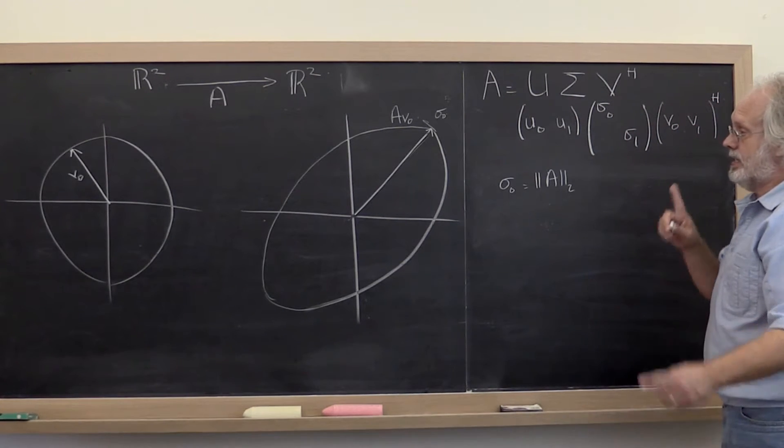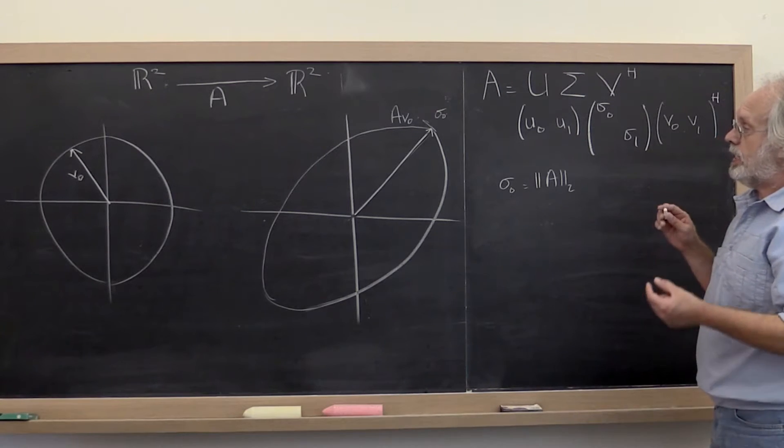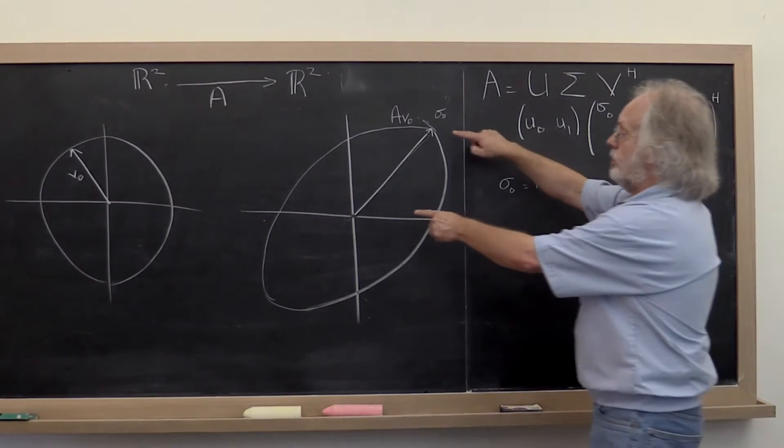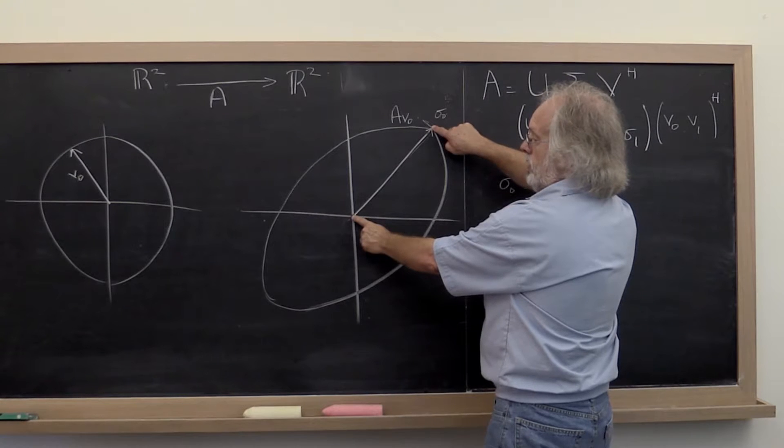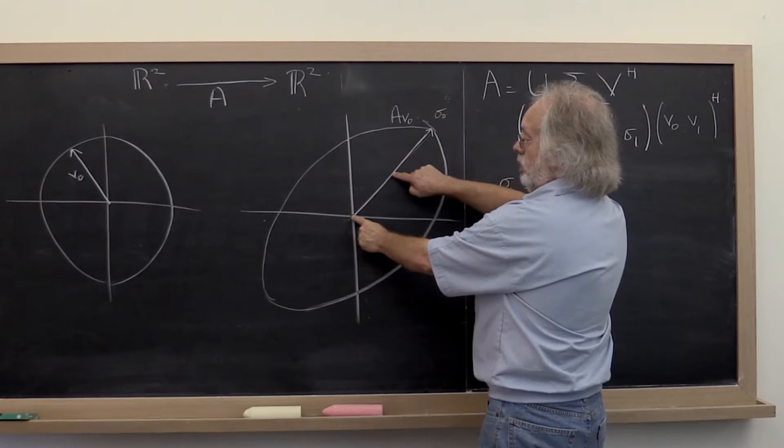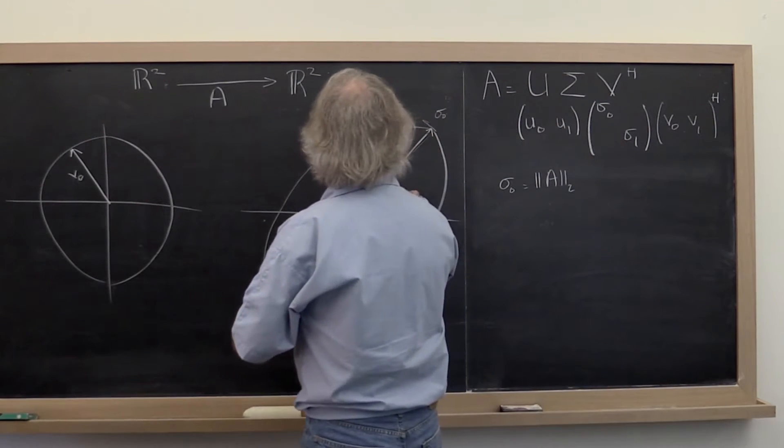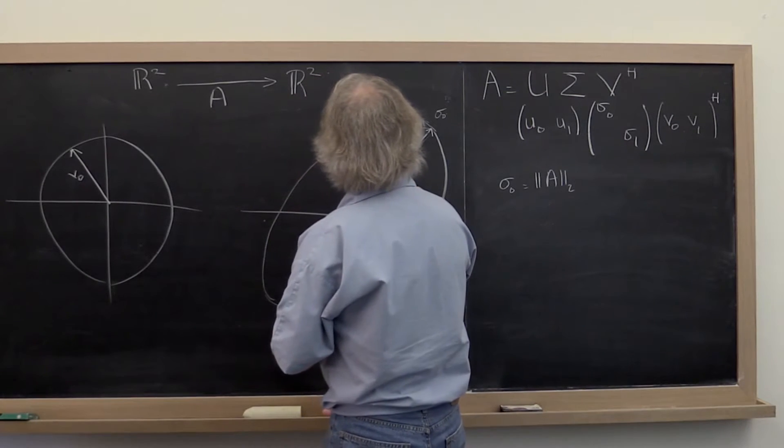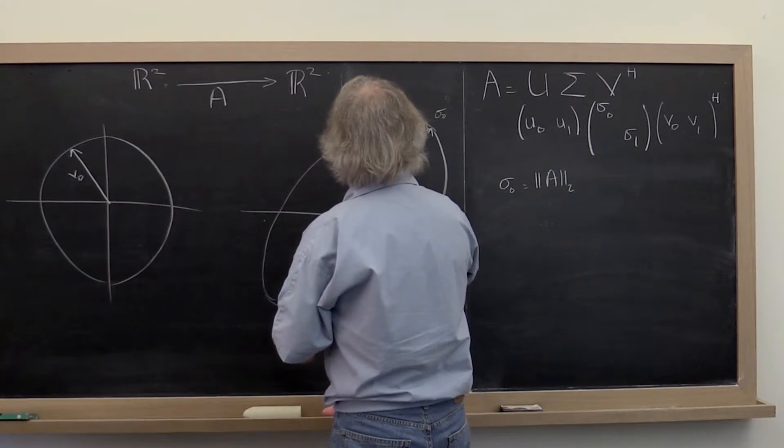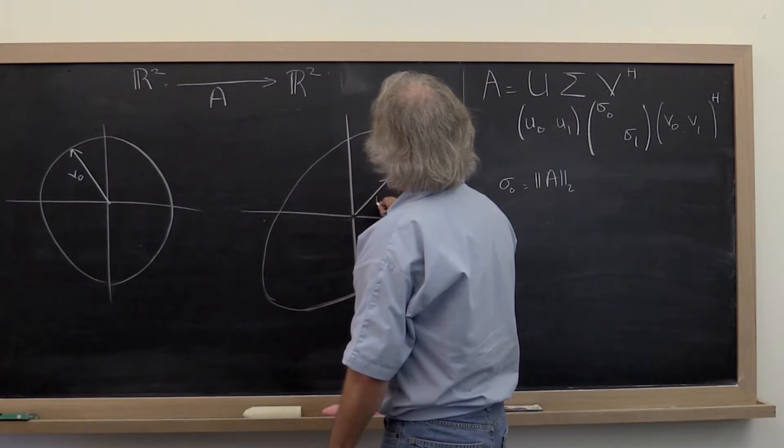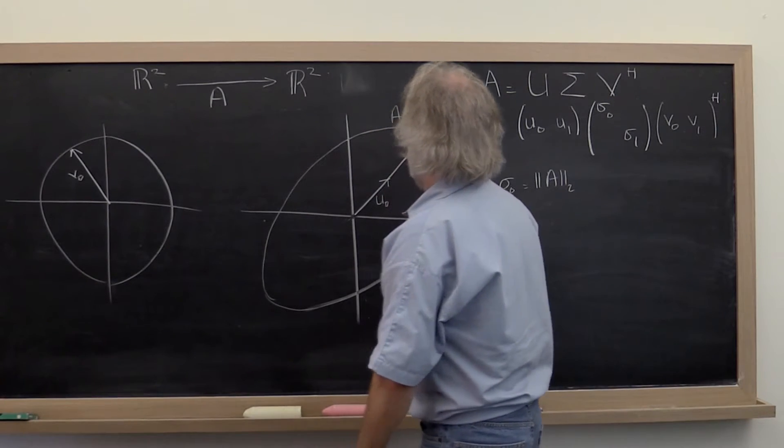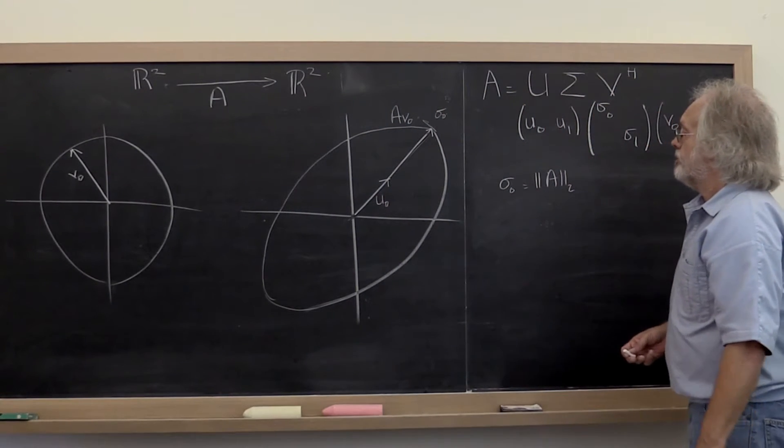Now we then said, let's pick U0 in that direction, but of length 1. So we could put a unit circle here, but let's just put it right here. Let's say that that's unit length. And that is U0.